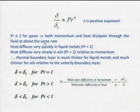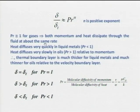To summarize: delta equals delta_t for Prandtl number equal to 1, delta is greater than delta_t for Prandtl number greater than 1, and delta is less than delta_t for Prandtl number less than 1. Students should be tested on these concepts — they are fundamental and cannot be overemphasized.